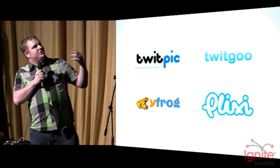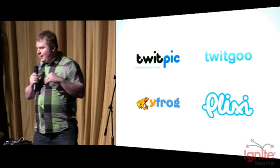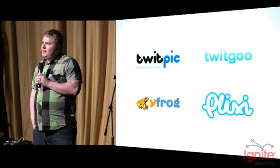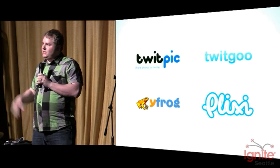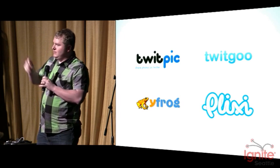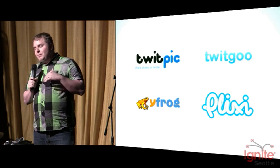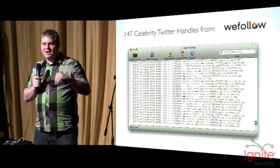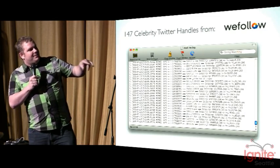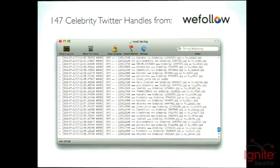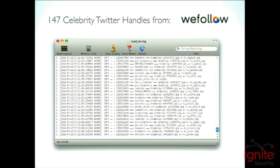This got me intrigued. So basically what I did is I used a bunch of Twitter photo APIs and looked through them. I saw that they had popular people — a bunch of celebrities. So I wrote a script — for my nerds out there, it was written in Ruby — and I grabbed the 147 celebrity Twitter handles from WeFollow, and ran a script to download all of their images from these services.